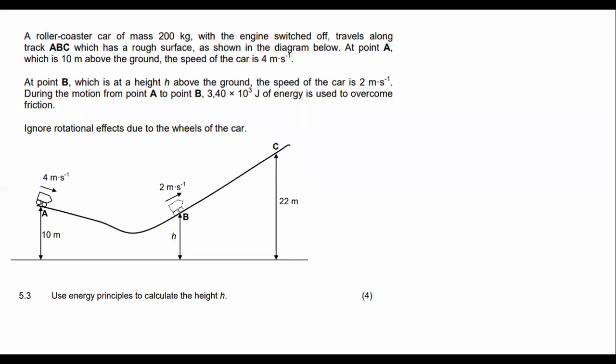Just try to pick out the important things. The roller coaster of mass 200 kilograms with the engine switched off travels along track ABC, which has a rough surface. I know some of you love your highlighters. I probably should do this every time—some of you just love highlighters. At a rough surface, as shown in the diagram below at point A, which is 10, the speed of the car is 4 meters per second.